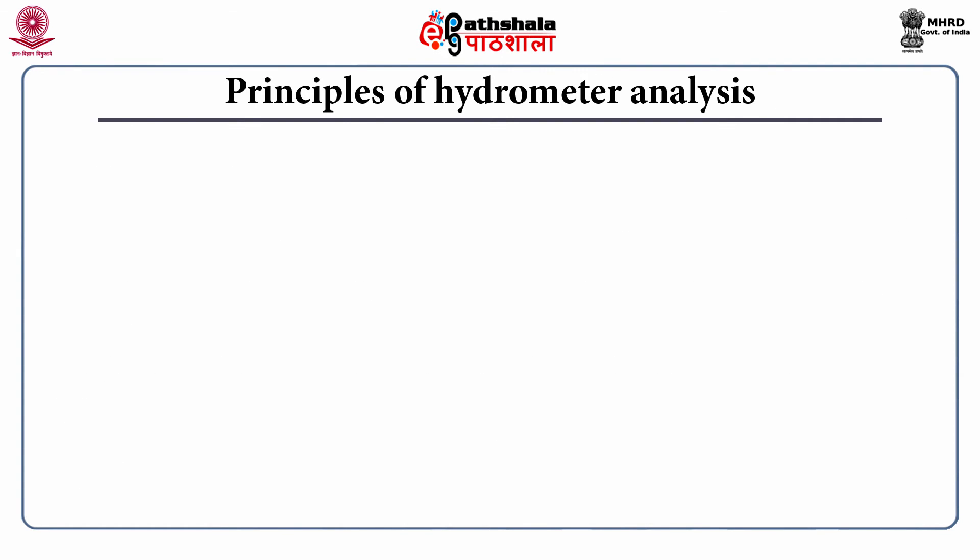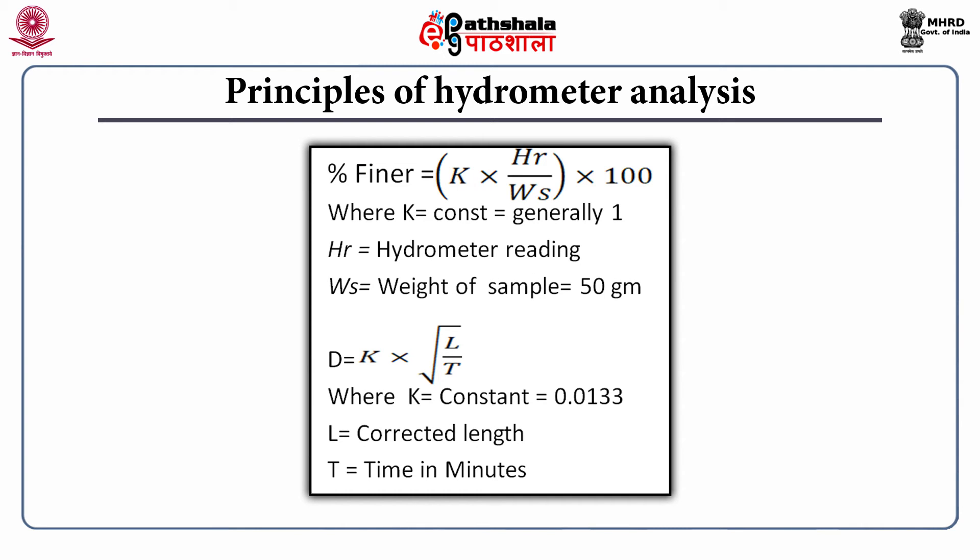The hydrometer analysis is described by two equations: one to find the diameter of the sediment or soil particles, and the other to find percent finer. Percent finer = k × (hr / ws) × 100, where k is a constant generally taken as 1, hr is the hydrometer reading, and ws is the weight of the sample which is 50 grams. For calculation of d, you have a constant k whose value is 0.0133, l is the corrected length, and t is the time in minutes.